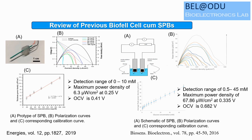Another work used buckypaper modified with enzyme as both anode and cathode. The detection range of glucose was 0.5 to 45 mM with a power density of 67.86 microwatts per cm² at 0.335 V, and an open circuit potential of 6.82 V. The linearity was poor but power density was high. A key disadvantage is that buckypaper cannot be used in integrated systems and is not scalable.